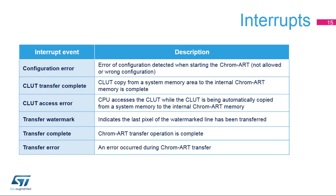The Chrom-ART Accelerator has six interrupt sources to signal configuration errors, CLUT transfer complete, CLUT access error, watermark reached during a transfer, transfer complete, and transfer error. No DMA trigger is used as the Chrom-ART Accelerator embeds its own DMA.